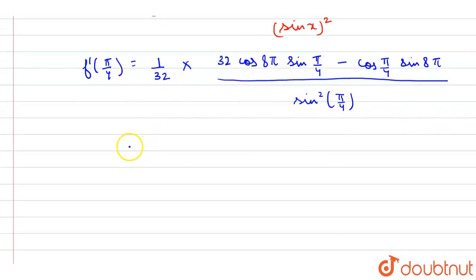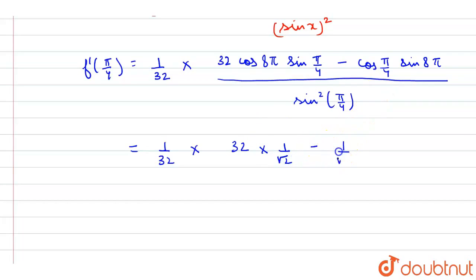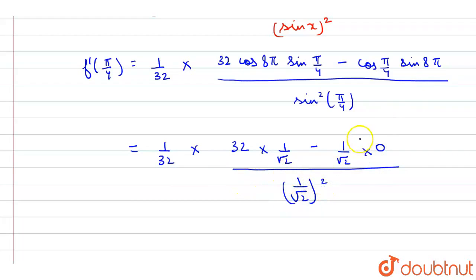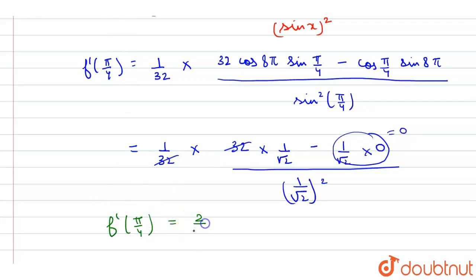Now evaluating: cos(8π) = 1, sin(π/4) = 1/√2, cos(π/4) = 1/√2, and sin(8π) = 0. So the second term vanishes. The 32s cancel and we get f'(π/4) = (1/√2) / (1/2) = 2/√2 = √2. The final answer is √2.